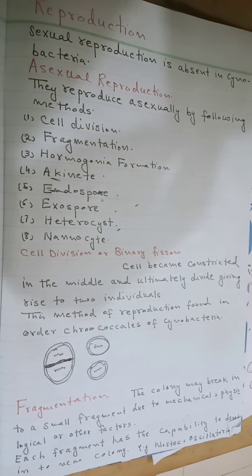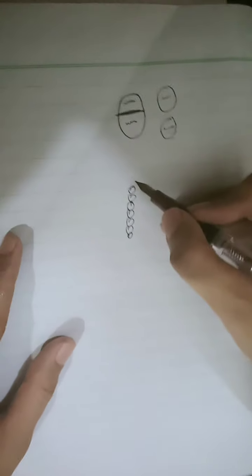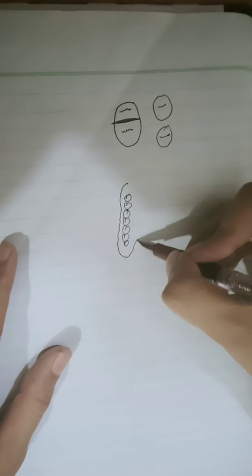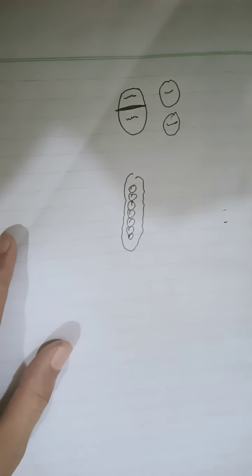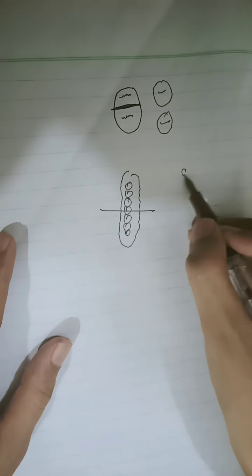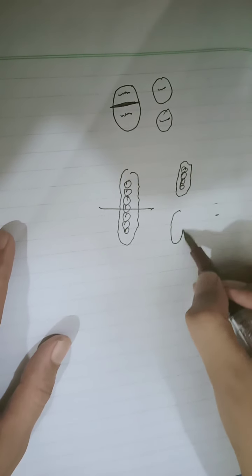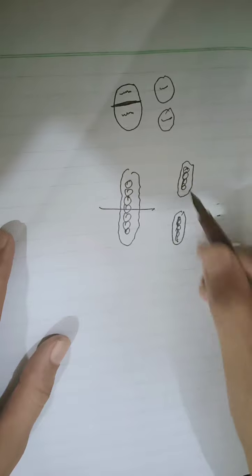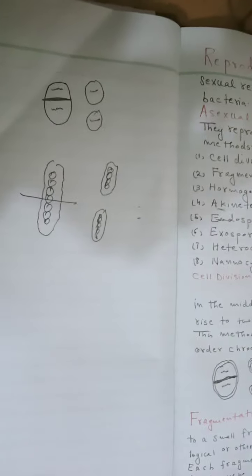The next method is fragmentation. This is a cyanobacteria colony, which is a colonial form. What happens is that if this colony encounters a mechanical injury or a physiological factor, it breaks down into two or more fragments, and each fragment develops into a new colony. This type of asexual reproduction can be found in Nostoc and Oscillatoria.